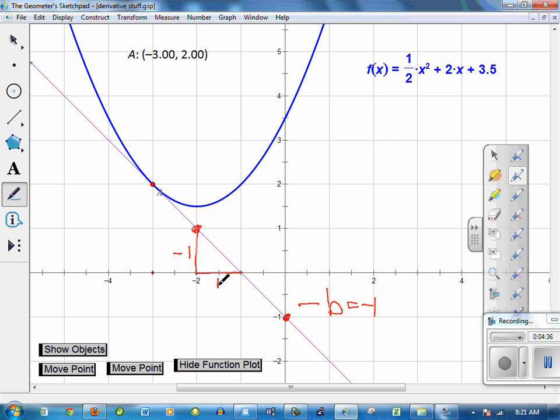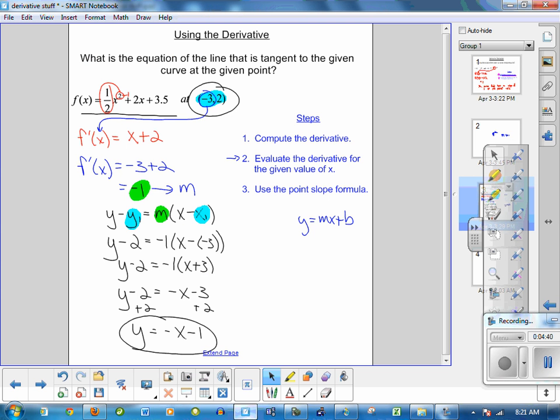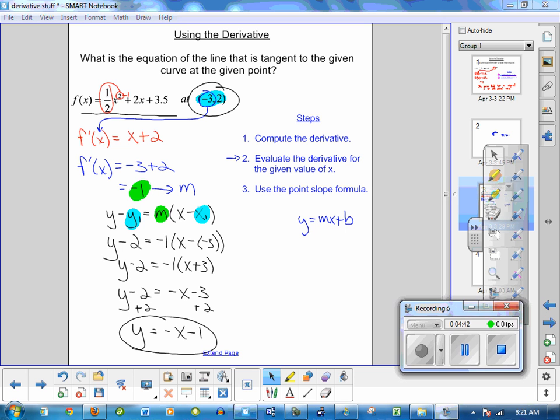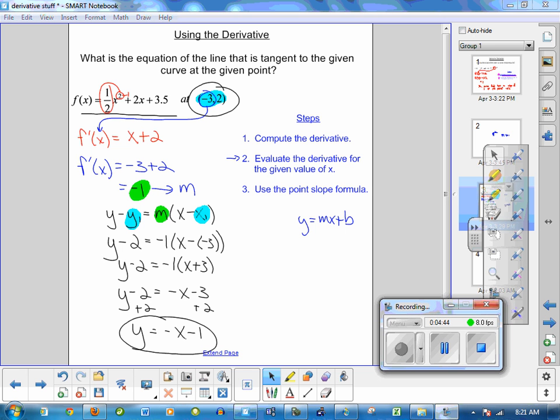So that is pretty much it. In a nutshell, it's a classic derivative problem. You'll be responsible for it on the test. Again, this problem revolves around, in broad strokes, finding the derivative to get the slope so that you can use the slope and the point to find the equation of the tangent line.